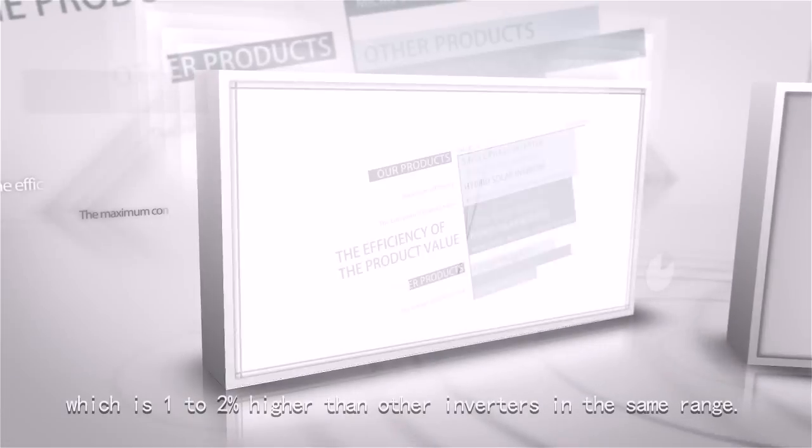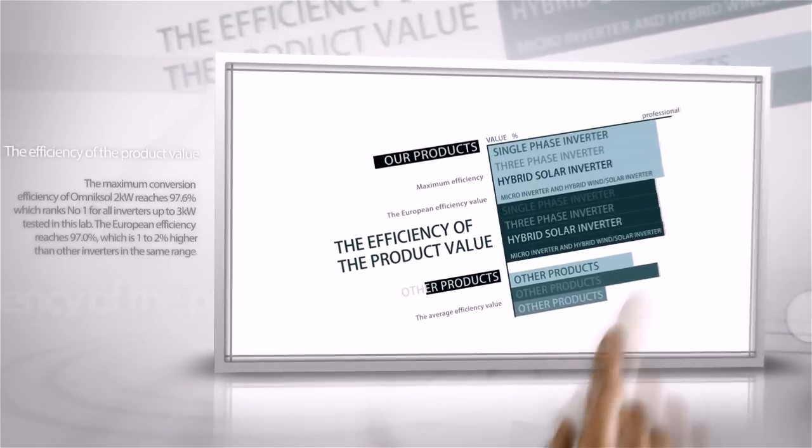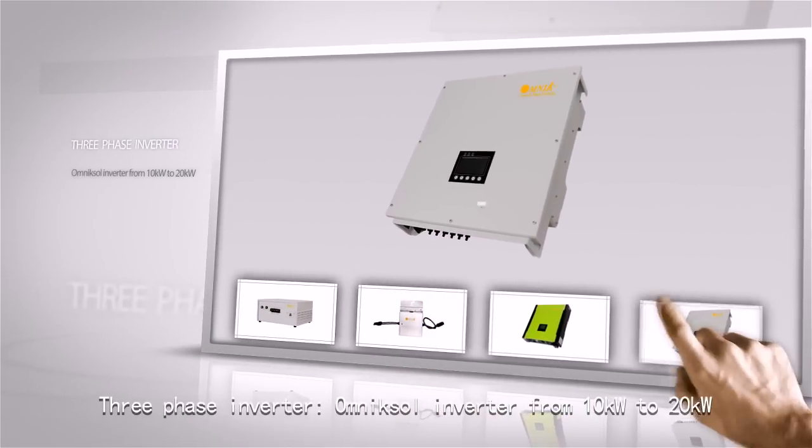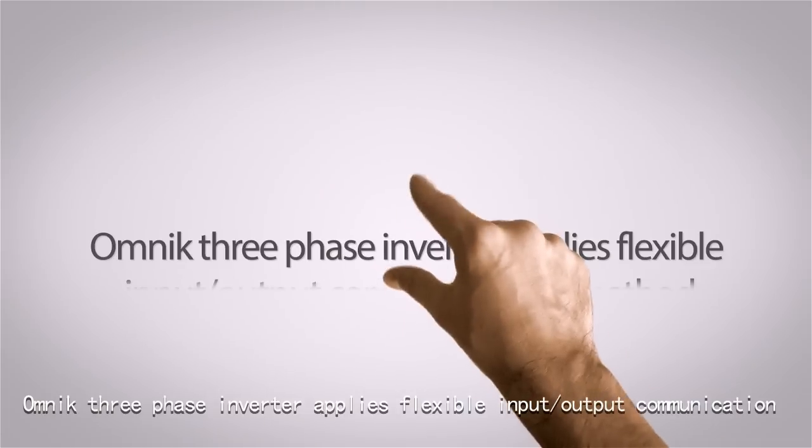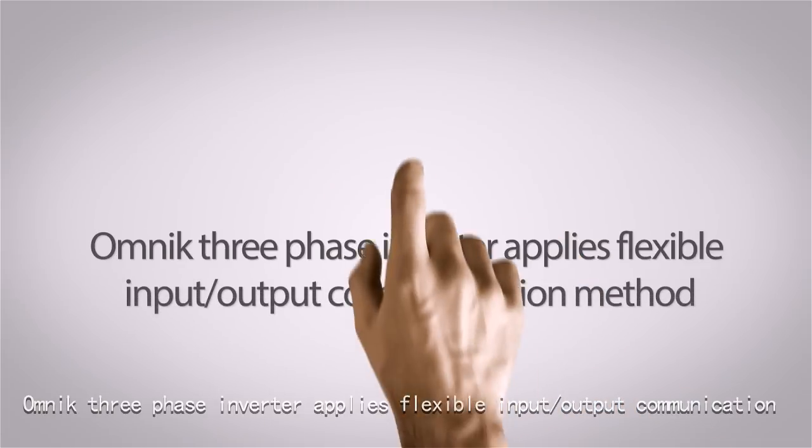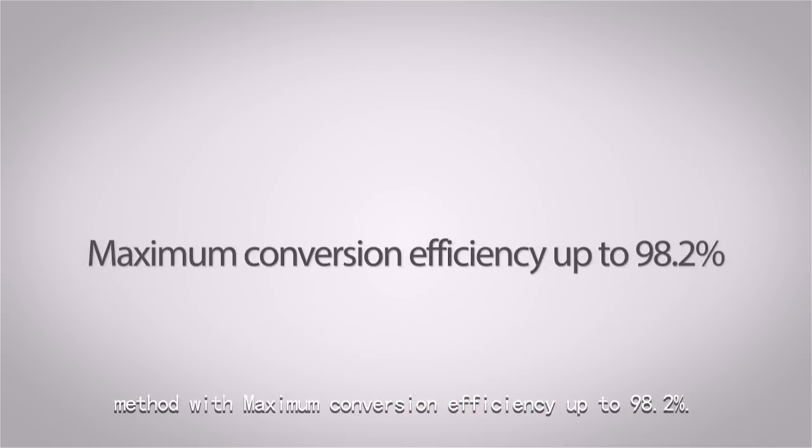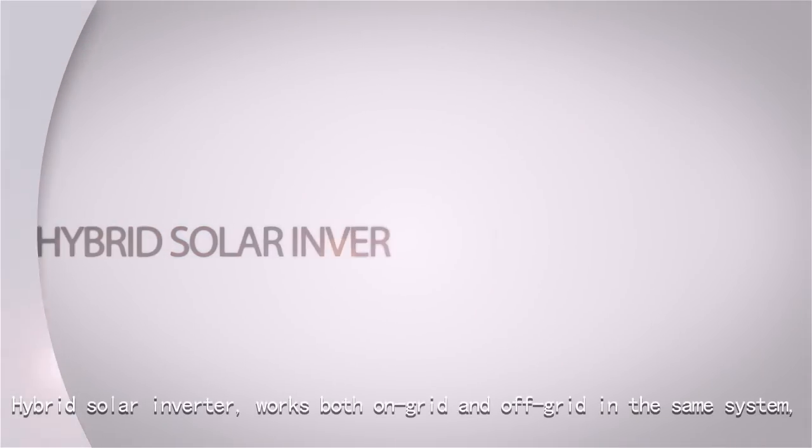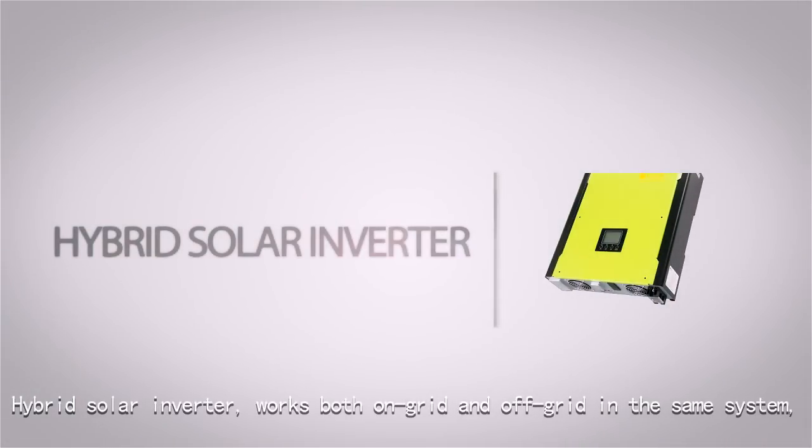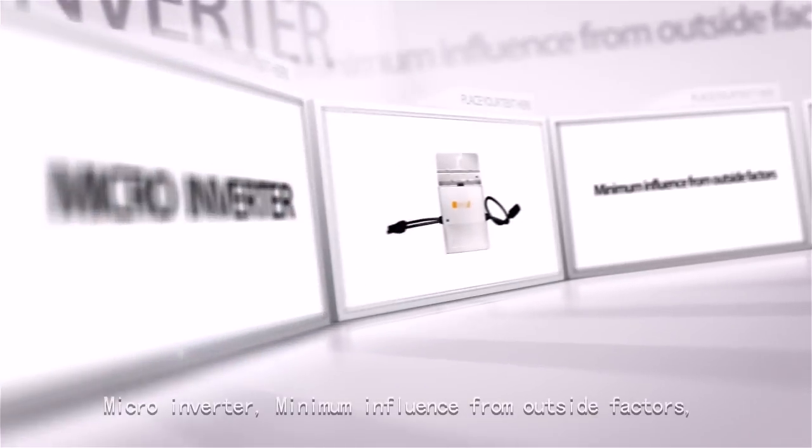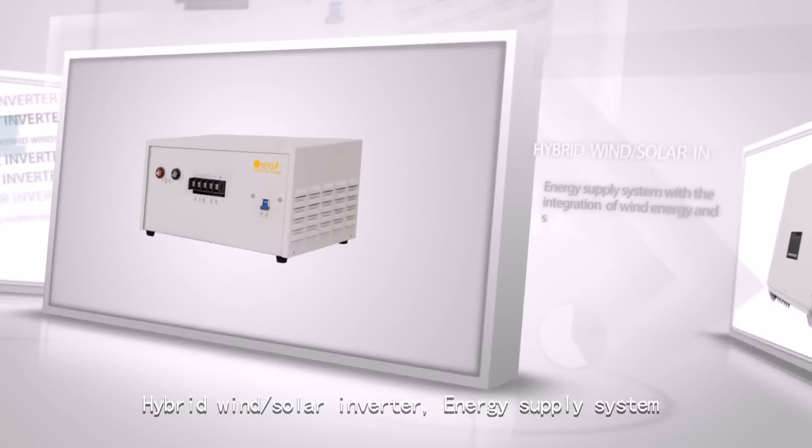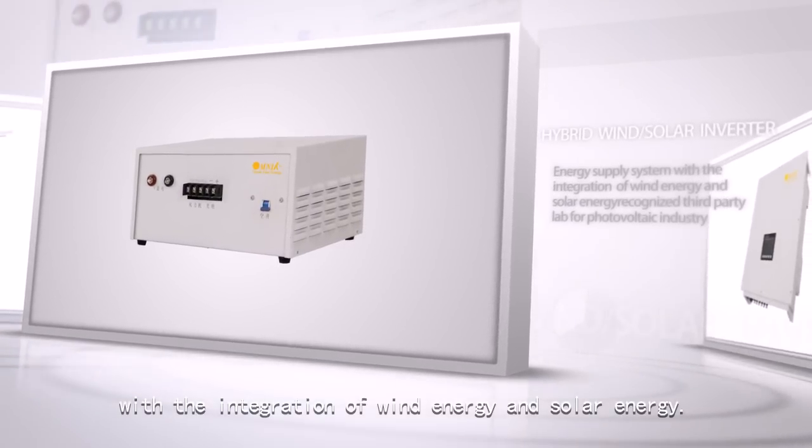Three-phase Omnic Salt inverters range from 10 kilowatts to 20 kilowatts, applying flexible input and output communication method with maximum conversion efficiency up to 98.2%. Hybrid solar inverters work both on-grid and off-grid in the same system, ensuring local consumption under various complex environments. Micro inverters have minimum influence from outside factors with maximum system conversion efficiency. Hybrid wind and solar inverters integrate wind energy and solar energy in one energy supply system.